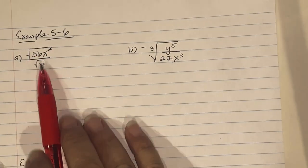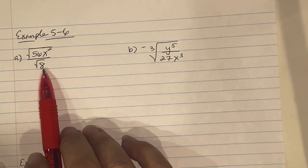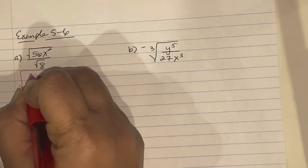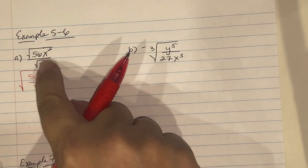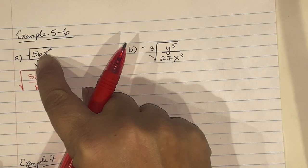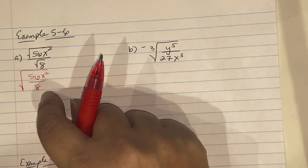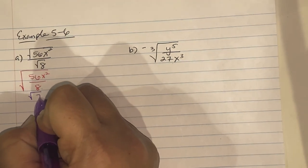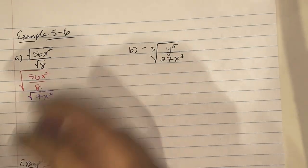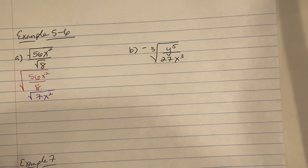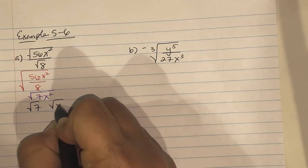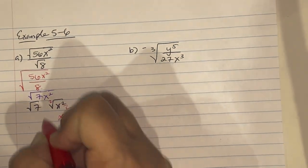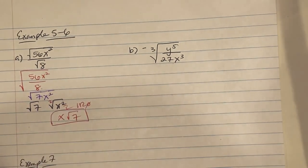Example 5/6 uses division. Simplify √(56x²) / √8. First join them under one radical: √(56x²/8). Since 56 ÷ 8 = 7, we get √(7x²). Separate: √7 · √(x²). For x²: 2 ÷ 2 = 1 remainder 0, so x comes out. Final answer: x√7.